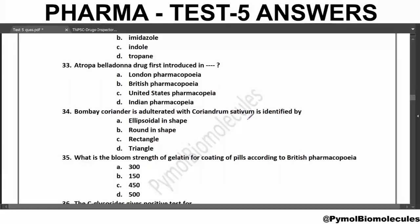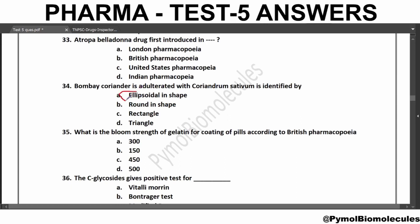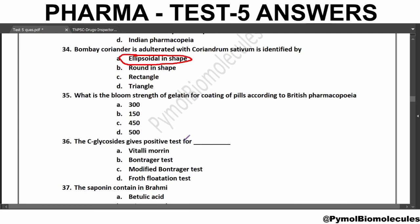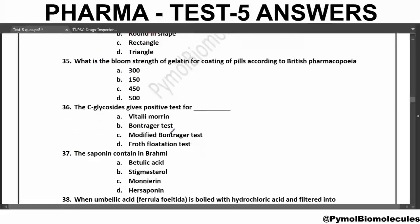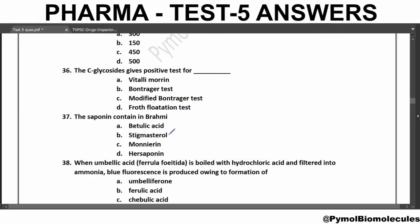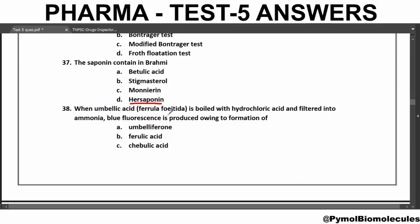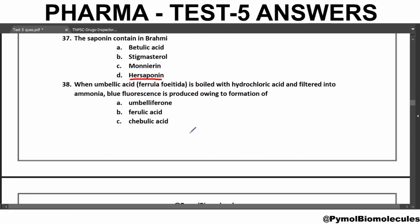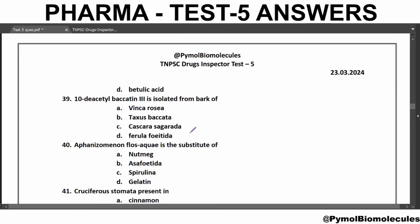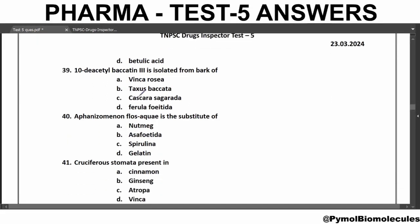Bombay coriander is adulterated with Coriandrum sativum, which is identified by its ellipsoidal shape. What is the Bloom strength of gelatin for coating of pills according to British Pharmacopoeia? The answer is 150. The C-glycosides give a positive test for the modified Borntrager test. The saponin contained in Brahmi is Hersaponin. When Ambilic acid, the main constituent of Ferula of Idae, is boiled with hydrochloric acid and filtered into ammonia, blue fluorescence is produced owing to the formation of Ambiliferone.